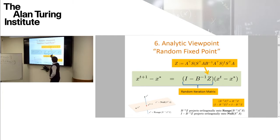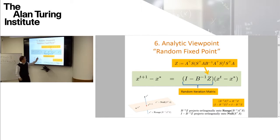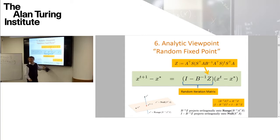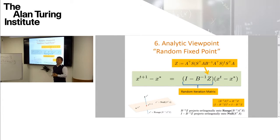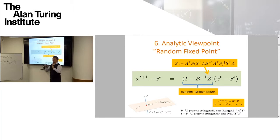This projection has eigenvalues only zero or one, so the largest eigenvalue cannot exceed one — it is a contraction, though not a strict contraction. For the randomized method you want it to be a strict contraction on average, and that is the assumption one needs to throw in — but it is a very weak assumption.